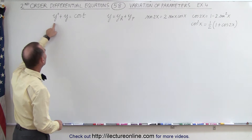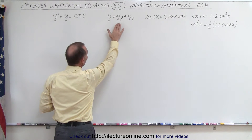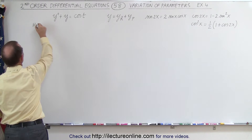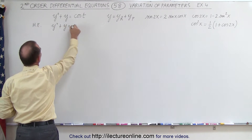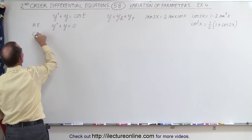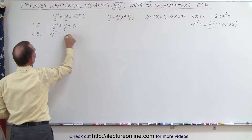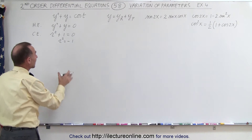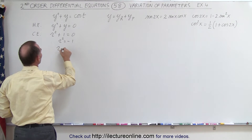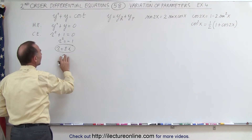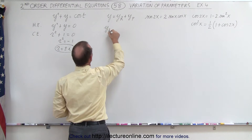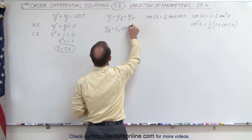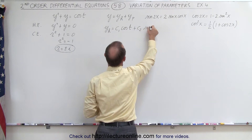First of all, we need to find the homogeneous part of the solution because the general solution is the sum of the homogeneous plus the particular solution. So the homogeneous equation will look as follows: y double prime plus y equals 0. The characteristic equation therefore becomes r squared plus 1 equals 0, or r squared equals negative 1. Taking the square root of both sides, we get two imaginary roots: r equals plus or minus i. That means the homogeneous part of the solution is c1 times cosine of t plus c2 times sine of t.